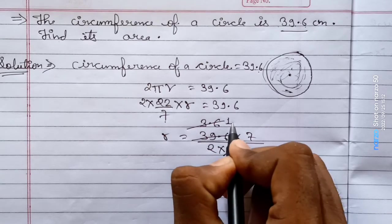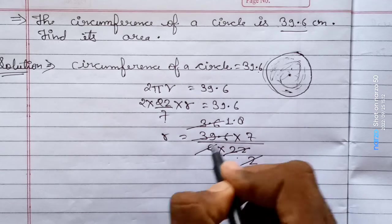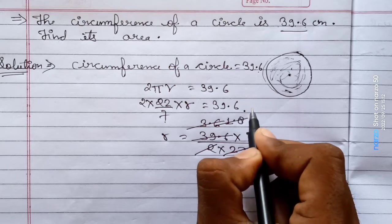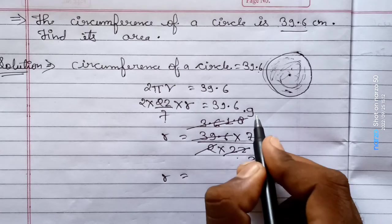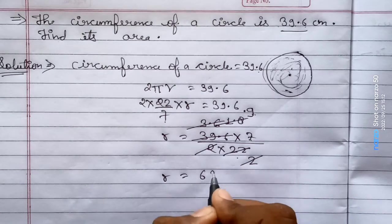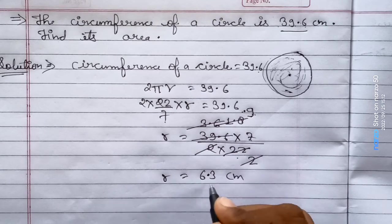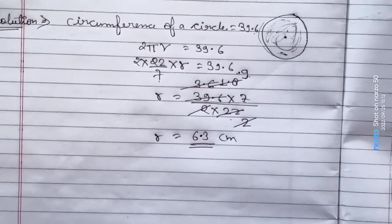The value comes out to 0.9 and here radius is 7 into 0.9, which gives 6.3. So the radius is 6.3 centimeters.